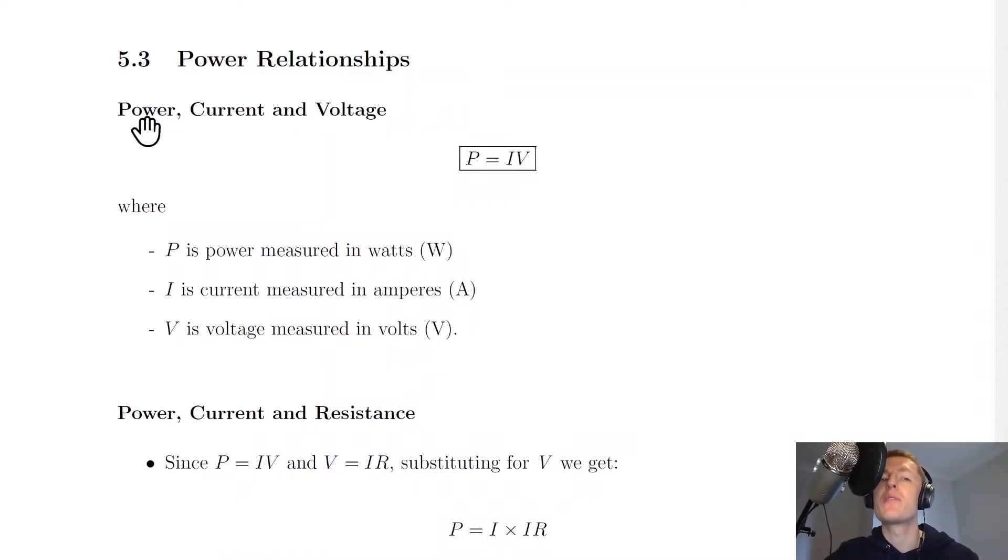The first power relationship we'll look at is the one for power, current, and voltage. We have an equation relating power P, current I, and voltage V. It says that P equals IV.